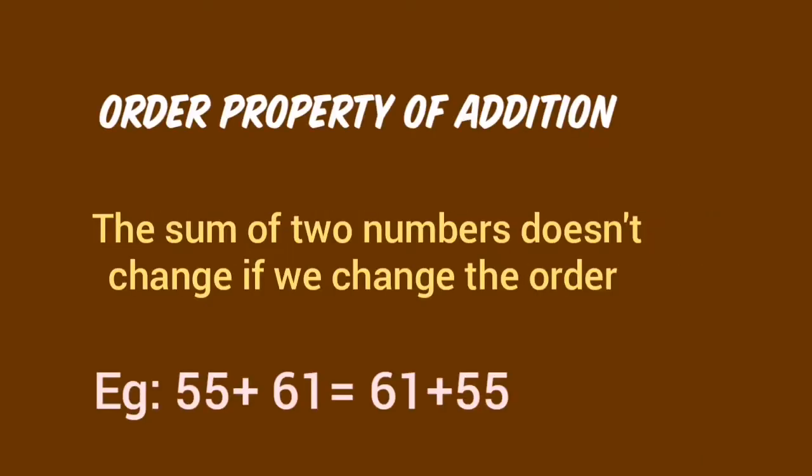Next topic is properties of addition. The first property is the order property: the sum of two numbers does not change if we change the order. For example, 55 plus 61 is equal to 61 plus 55 — both answers are the same.